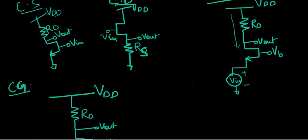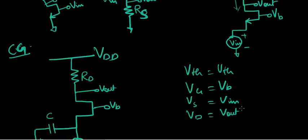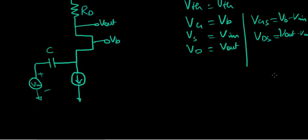And to prevent confusion, let's write down what each thing is. Vth is going to be Vth. Because once we start writing the equation, it really gets confusing. Vg is Vb here. Vs is Vin. And Vd is Vout. Is that clear? Vgs is what? Vb minus Vin. Vds is what? Vout minus Vin. As simple as that.